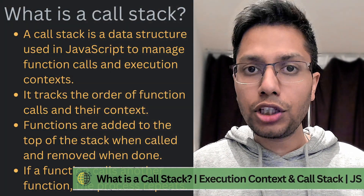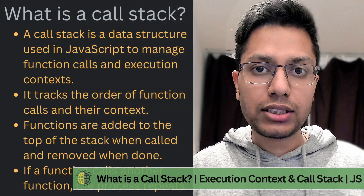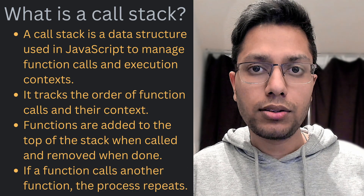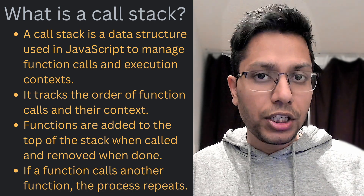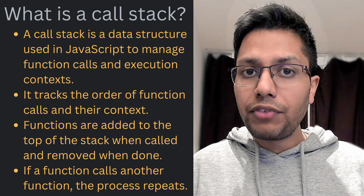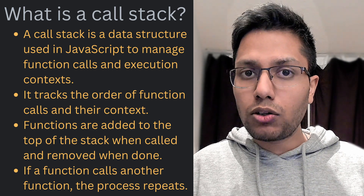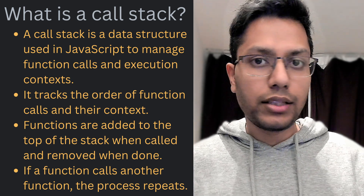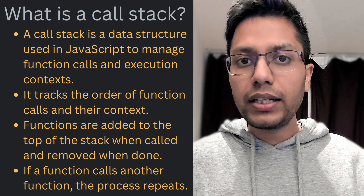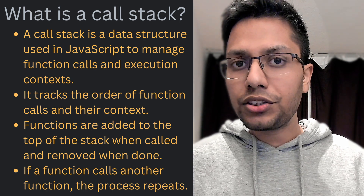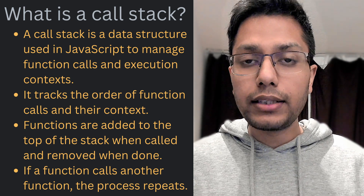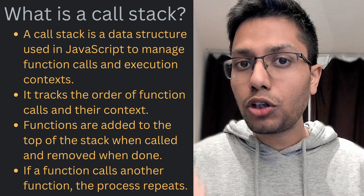A call stack is a data structure used by JavaScript to manage execution contexts and function calls. It keeps track of the order in which functions are called and in which context they are called. When a function is called, it is added to the top of the stack; the function executes and when it is done it is removed from the stack. If that function calls another function, the new function is added to the top of the stack and the process repeats.